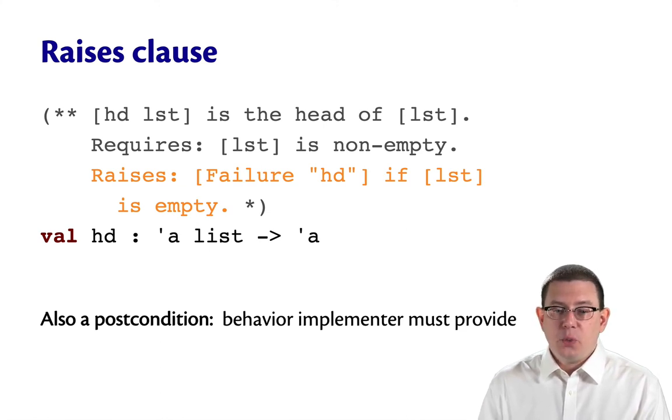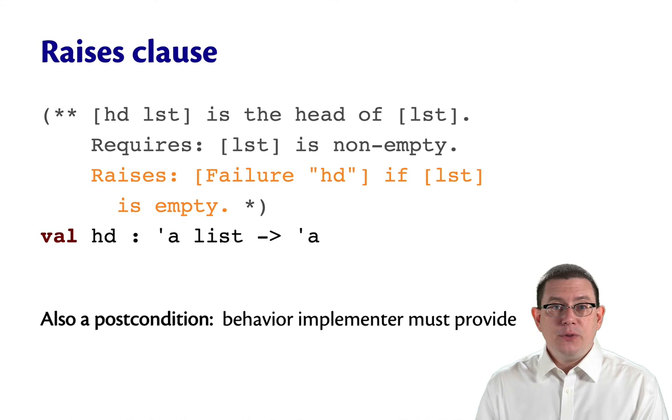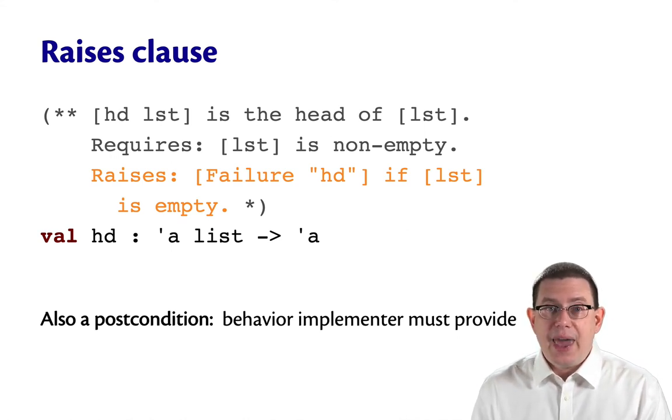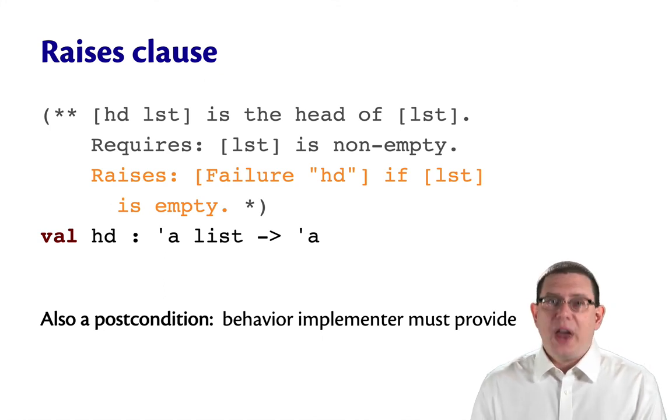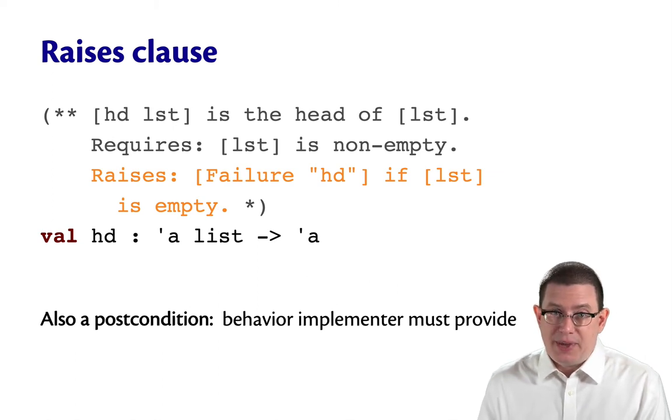It raises failure with the string head. This is what the standard library function happens to do. That makes the exception actually part of the post condition. Because it's stating a behavior of the function and it's on the implementer to ensure that that behavior actually occurs. If head failed to raise this exception when the input list was empty, that would be the implementer's fault. The client, in fact, might be relying on this behavior. And so the implementer has to make sure that it happens.